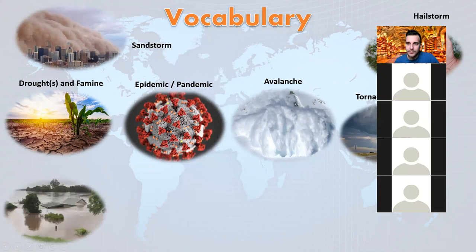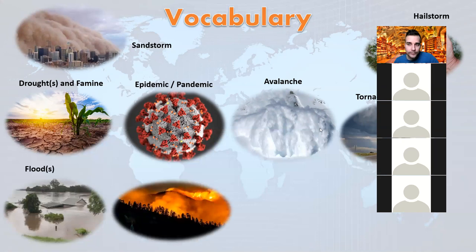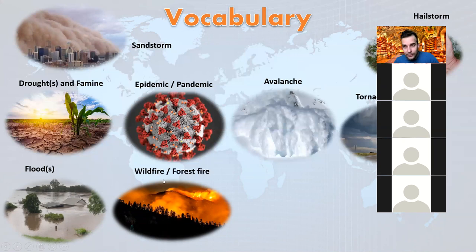Then we have this one — anybody know? Flood. Be careful because the pronunciation here is quite irregular — we say 'flood.' Some people might want to say it differently, but we say 'flood.' Then, anybody knows? Forest fire. This is in the book in 4C. There is another word used more often — if I translate it word by word, it's 'divoký oheň.' Wildfire. Wildfire means fire that nobody can control — it goes all around the forest and burns everything.